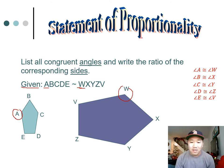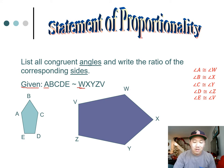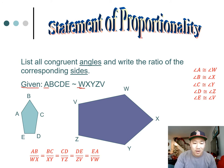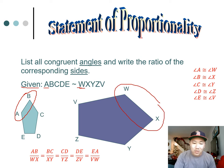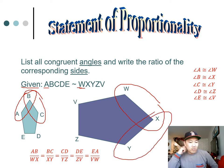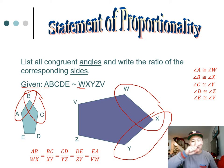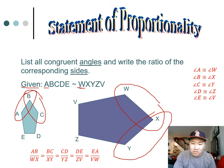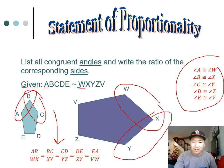It also says you have to write the ratios of the corresponding sides. You write the ratios of the sides: AB over WX equals BC over XY equals CD over YZ equals DE over ZV equals EA over VW. You basically go around the whole pentagon and compare the sides. Remember: the angles are equal, but the sides are proportional — you set the angles equal but make a fraction for the sides.